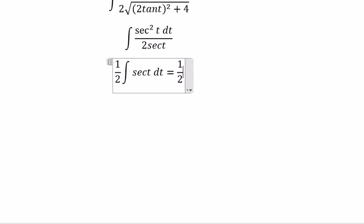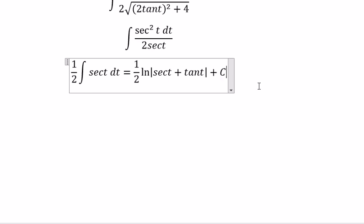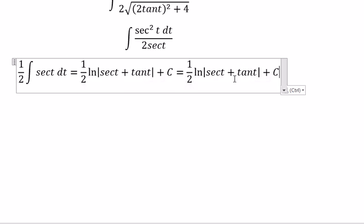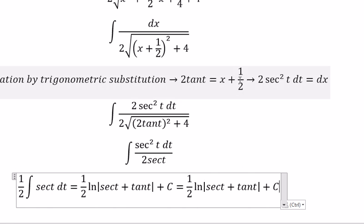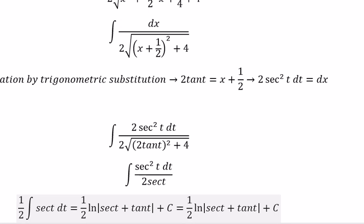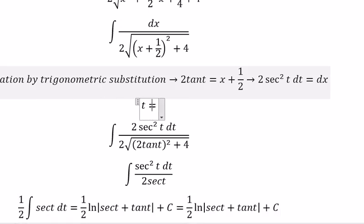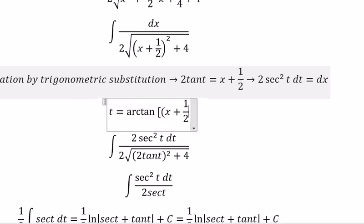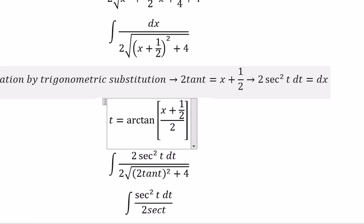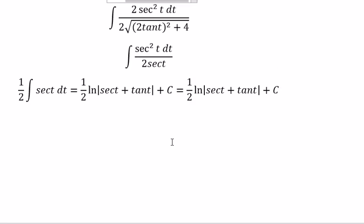And we know that this is ln of the absolute value of secant of t plus tan(t). We need to change back for x. We divide both sides by 2, and we get t equal to arctan of x plus 1/2 divided by 2. We put this one in here.